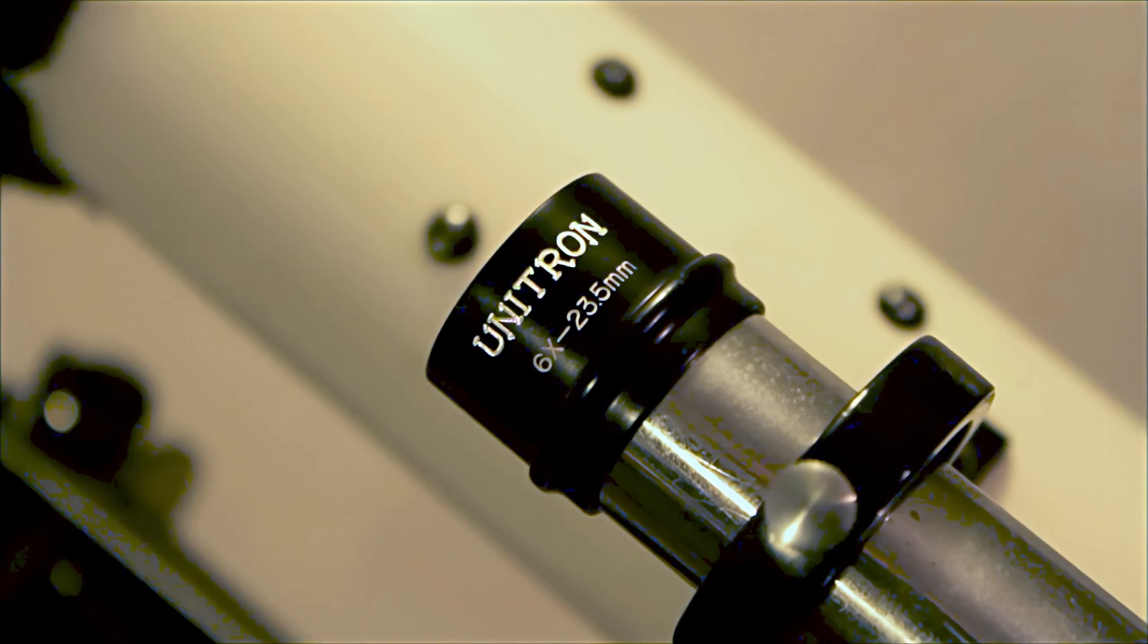This is a close-up of the Unitron Finder on the model 128. It's very rare and unusual for them to print this kind of information, this kind of specific information, on a finder. I think this is the only one I've ever seen like this. Sometimes they will have the Unitron brand on them, but never all the detailed information.